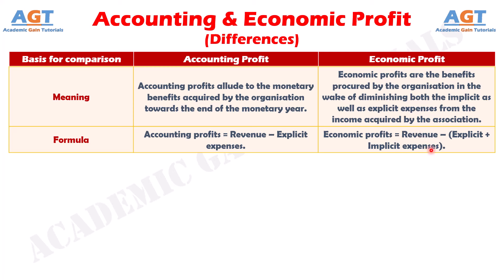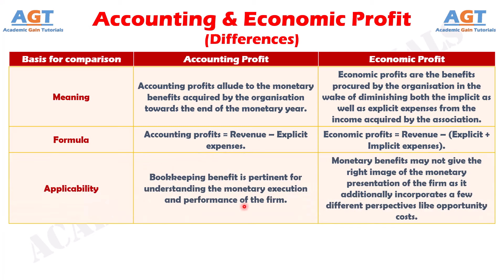Number three: accounting profit is pertinent for understanding the monetary performance of the firm. Whereas economic profit may not give the full picture of the firm's financial performance, as it additionally incorporates perspectives like opportunity costs.